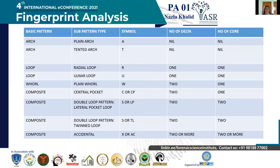Based on the direction of flow of ridges and the shape and presence or absence of delta, we have four main basic patterns, further divided into nine subtypes. They are: arch, subdivided as plain arch and tented arch; loop, divided as radial loop and ulnar loop; whorl; and composite, which includes central pocket, double loop pattern, and accidental.